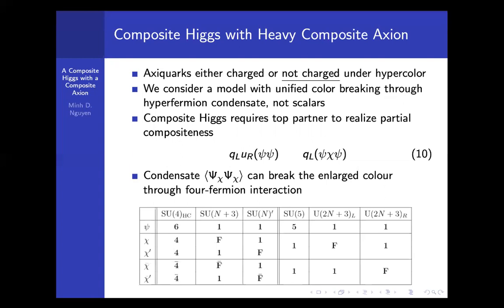So how do you realize this? How do you break the unified color? In composite Higgs models, there's going to be some condensate. Let's say it's a ψ. Here is a constituent that gives rise to the Higgs, so the ψ-ψ bound state gives rise to the Higgs.